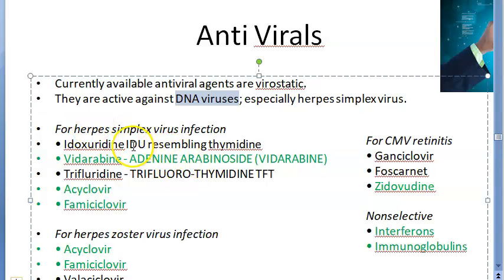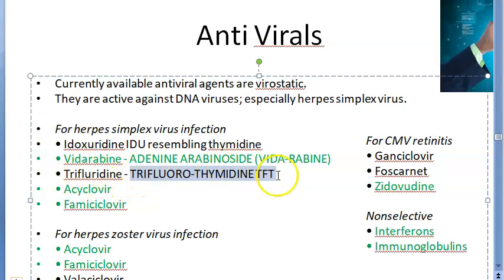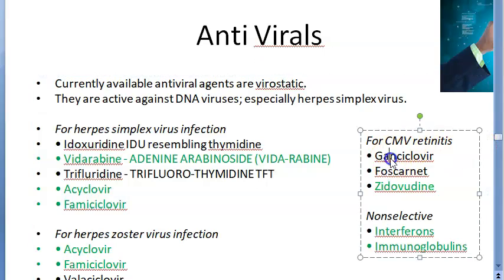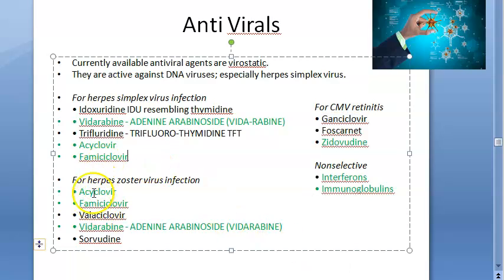For herpes simplex infection, you can think about IDU — idoxuridine — then vidarabine, then TFT — trifluorothymidine — acyclovir, famciclovir, and ganciclovir. Anything ending in '-vir' will usually be antiviral.